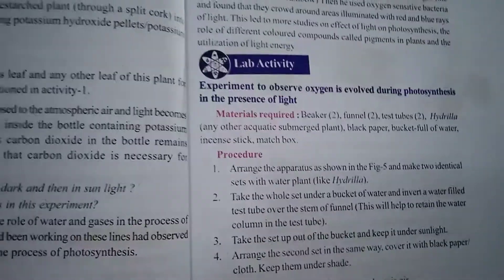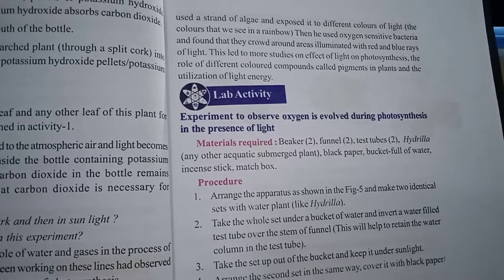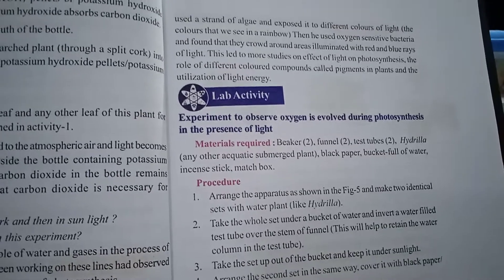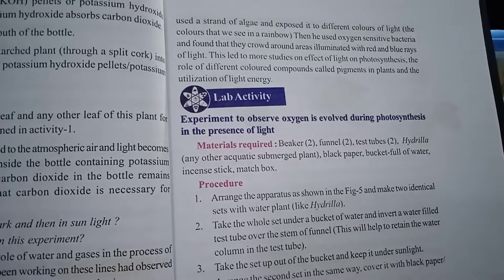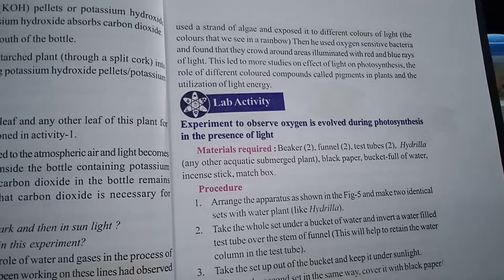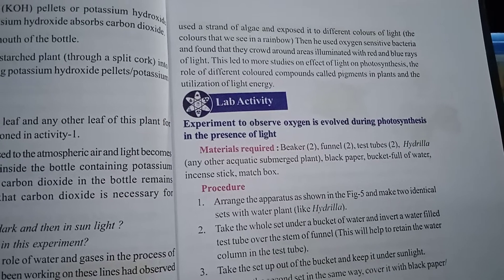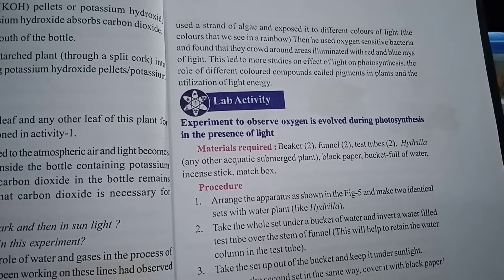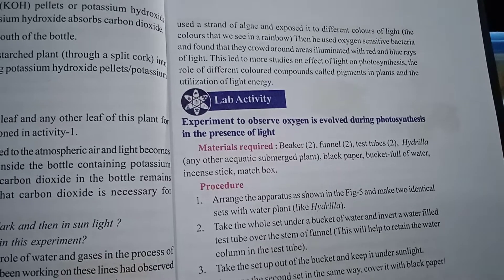Later, Engelmann in the early 20th century also conducted experiments on algae. He exposed a strand of algae to different colors of sunlight — as you know, a rainbow consists of seven different colors of light. He used oxygen-sensitive bacteria in his experiment.